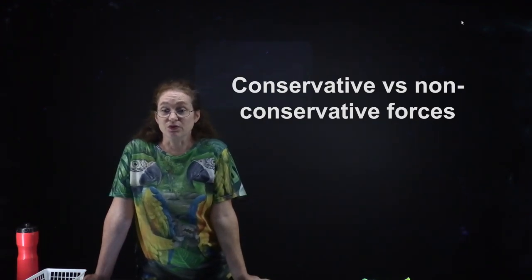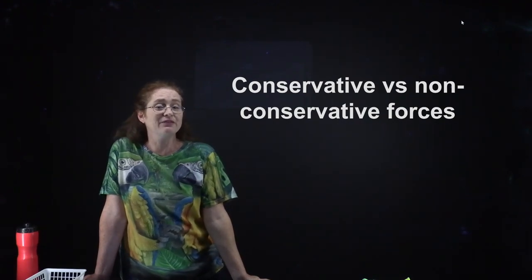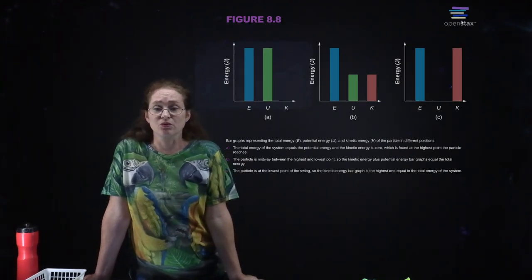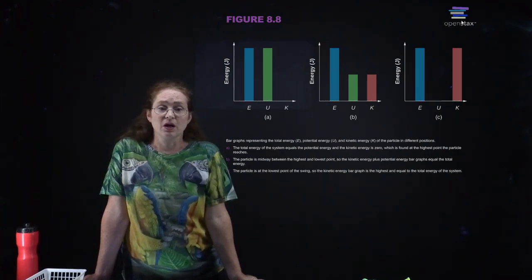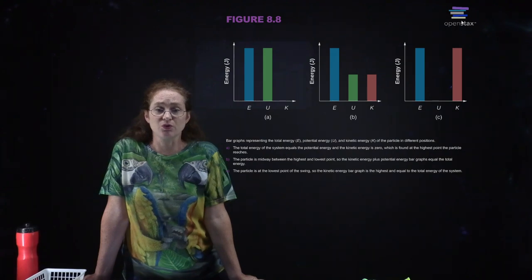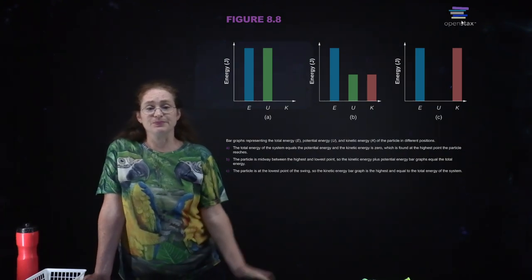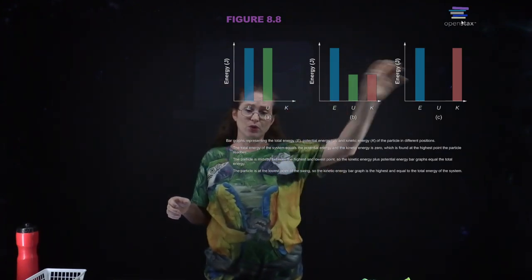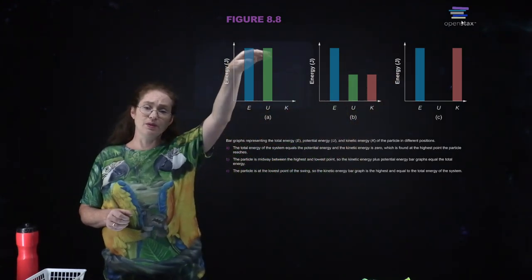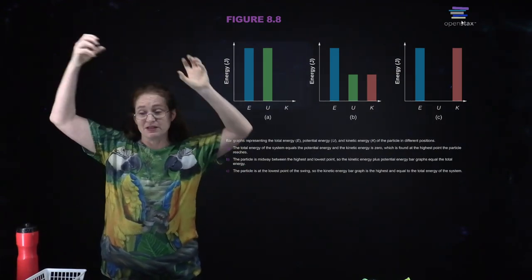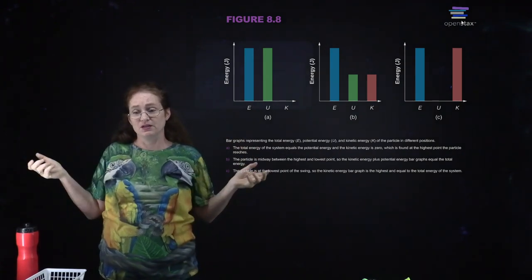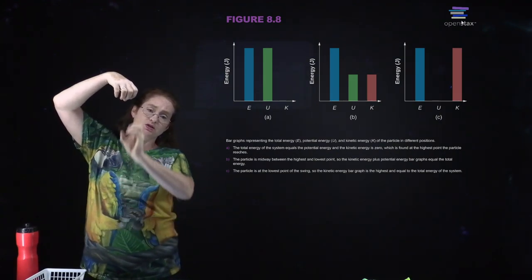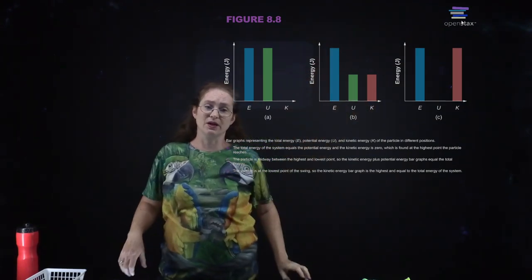We can also consider conservative versus non-conservative forces. Gravity is an example of a conservative force — the work done by gravity doesn't depend on the path taken. When you have a conservative force, you can have a different distribution between potential and kinetic energy depending on where you are in the trajectory, but the total amount of energy will be the same. For an ideal spring, it's also a conservative force — as the mass oscillates, the distribution of potential and kinetic energy changes but total energy stays the same.